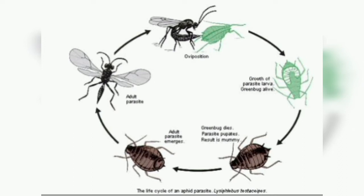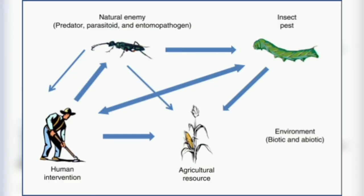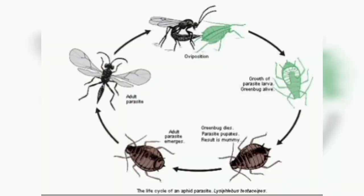Even many of the species we recognize as important pests only occasionally do significant damage to us or our resources. Natural enemies play an important role in limiting the densities of potential pests. This has been demonstrated repeatedly when pesticides have devastated the natural enemies of potential pests — insects which were previously of little economic importance often become damaging pests when released from the control of their natural enemies.